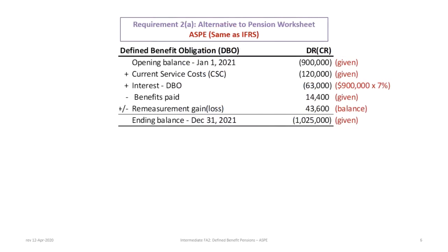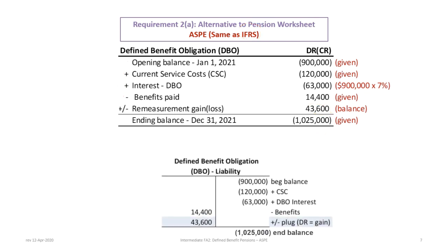If you don't want to use the pension worksheet, we have the alternative approach. This is exactly the same as under IFRS, so no need to go through in great detail. For the DBO, we start with the opening balance, add the current service costs, add the interest on the beginning balance, take out the benefits, and then adjust for any remeasurement gain or loss to arrive at the ending balance. If you like T-accounts, the beginning balance is on the right, plus service cost, plus interest, minus benefits, plus or minus any remeasurement gain or loss — in this case a remeasurement gain — giving us the ending balance.